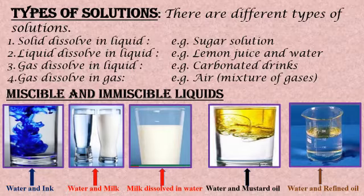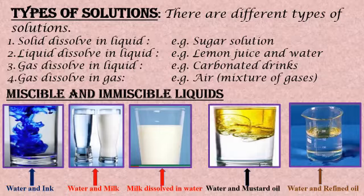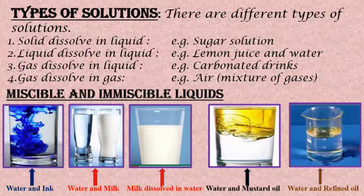Next, in the types of solution, we have miscible and immiscible liquids. Miscible liquids are when two liquids mix together completely with each other — for example, ink mixed in water and milk mixed in water. Immiscible liquids are when two liquids mix together but do not dissolve completely. As shown in the picture, you can see clearly in two separate glasses: mustard oil forms a layer, and refined oil mixed with water forms separate layers within the container.